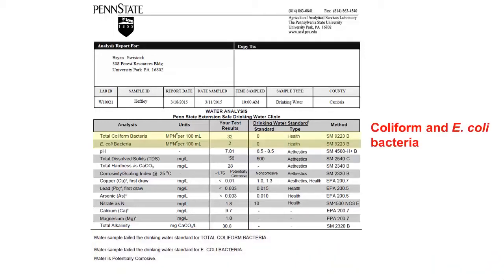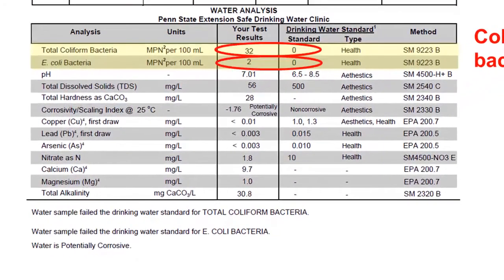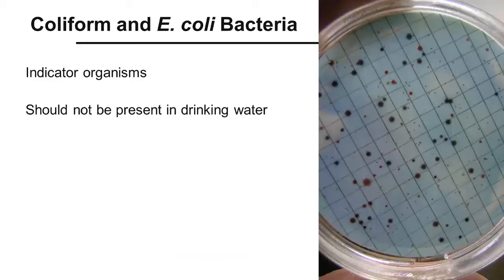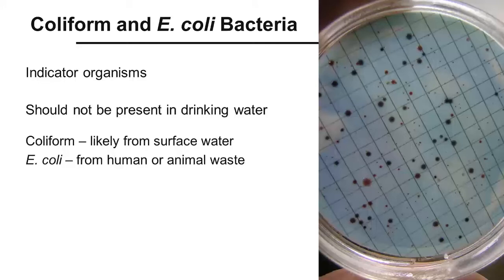Let's talk briefly about a couple of the most common water tests. The most common are the total coliform bacteria and E. coli bacteria tests that are included in all of the water test packages. On this report, the total coliform bacteria result was 32 colonies per 100 milliliters, while the E. coli bacteria result was 2 colonies per 100 milliliters. Both of these results are above the drinking water standard of 0 colonies and both represent a health concern. These generally harmless bacteria are tested as indicator bacteria that should not be present in drinking water because they indicate that a pathway exists for harmful bacteria to enter your drinking water. Most coliform bacteria come from surface water entering a well or spring, while E. coli bacteria indicate animal waste or human sewage is entering the water supply.